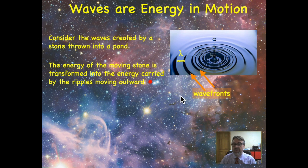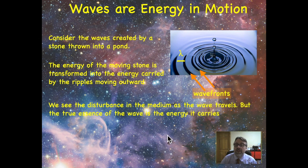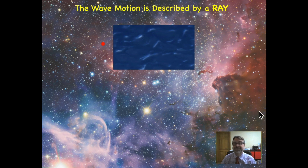The energy of the stone is transformed into the energy carried by the ripples moving outwards. I would like some way to describe that motion so we can then easily indicate which way the energy is going. Although we see the disturbance that is the bending of the water as the ripples move out, it's important to remember that the real essence of the wave is the energy that it carries. We're really concerned with where the energy is going because that energy can affect the world around it.